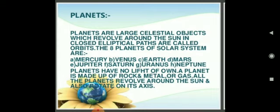Planets are large celestial objects which revolve around the sun in closed elliptical paths called orbits. In the night sky, planets appear as bright specks of light much like stars, but they do not twinkle. While the stars show no visible change in their position, the planets seem to move or wander with respect to the stars — that is why they are named 'planets'. All planets have definite paths in which they revolve around the sun, and the time taken by a planet to complete one revolution is called the period of revolution.